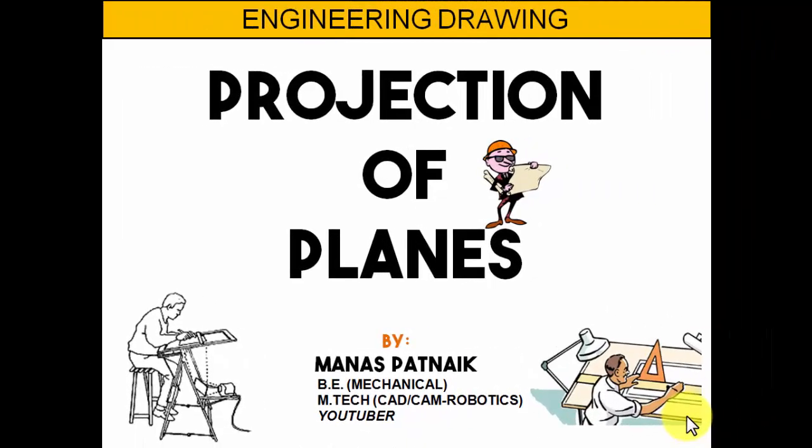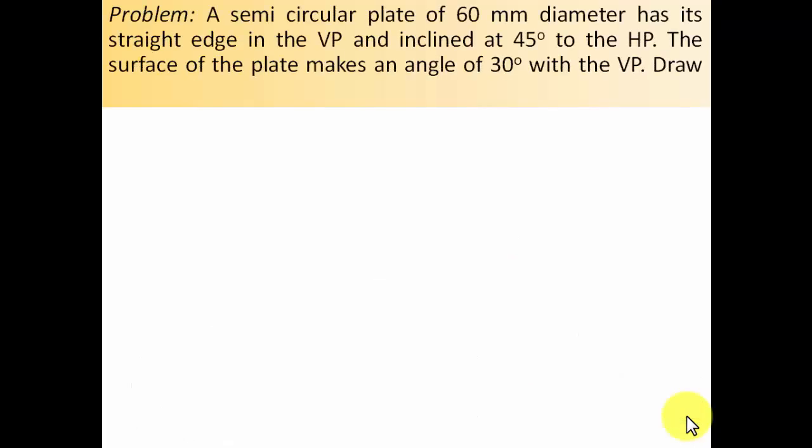Hi there guys, this is your friend and tutor Manas, and today we are continuing with our discussion on projection of planes. The object picked up today is a semi-circular plate having negligible thickness. A semi-circular plate of 60 mm diameter has its straight edge in the VP and inclined at 45 degrees to the HP. The surface of the plate makes an angle of 30 degrees with the VP. Draw its projections.